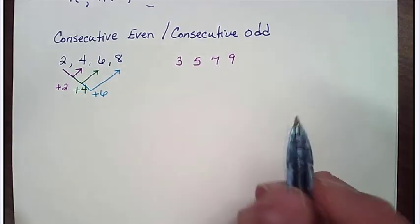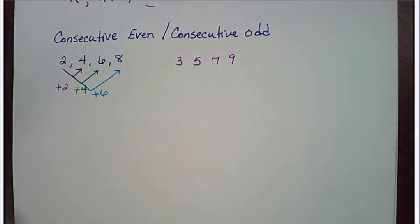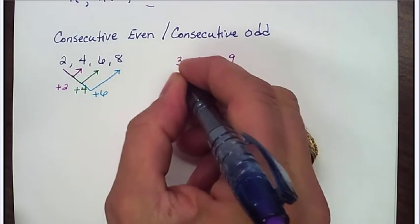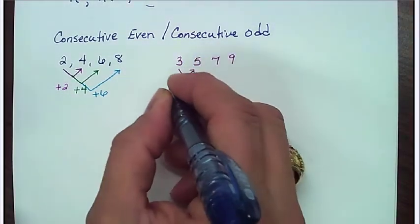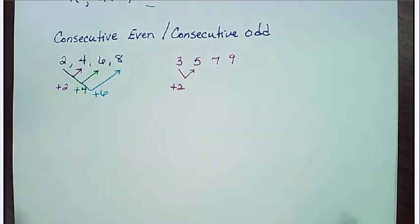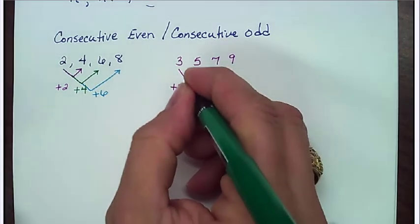So all I'm doing is I'm jumping one number to get to the next. So look what happens when I get to my 3, 5, 7, 9 here. And you may already be able to see it. If I go from 3 to 5, what am I going to add? Well, I'm going to add 2.